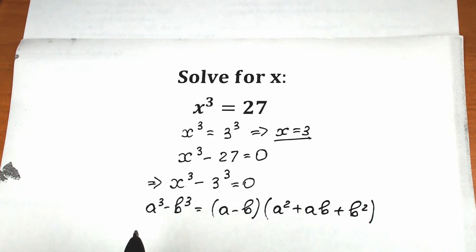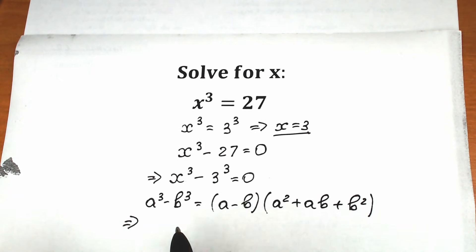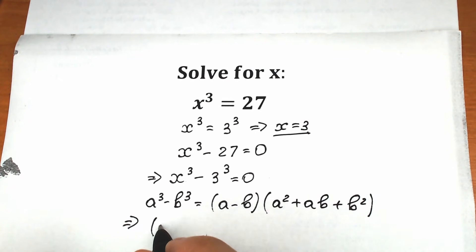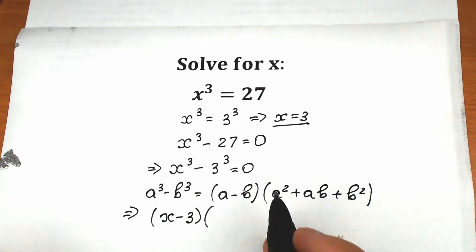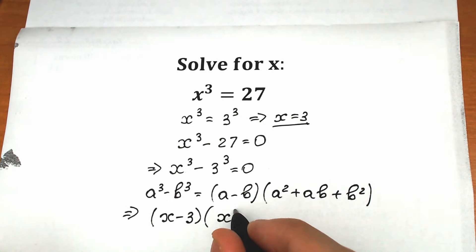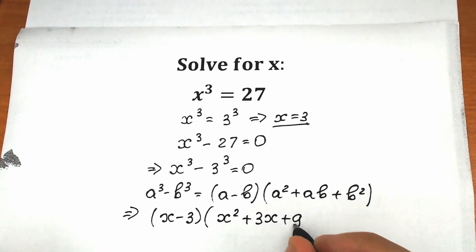Now let's apply this formula. We have absolutely the same thing — the difference of two cubes. As a result, with a = x and b = 3, we get (x minus 3) in the first parenthesis, and in the other parenthesis we have x squared plus 3x plus 9, all equal to 0.